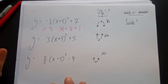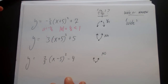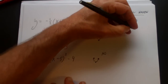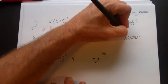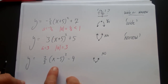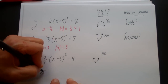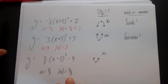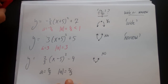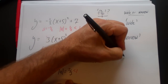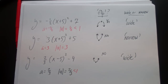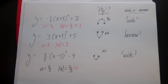For y equals three times x plus five squared: a equals three, so the absolute value of a equals three, which means it's narrow — narrower than y equals x squared. For y equals two thirds times x minus five squared: a equals two thirds, so the absolute value of a is two thirds, which is less than one — that's wide. Those are the basic rules for parabolas in vertex form. In the next video we'll go ahead and graph some.